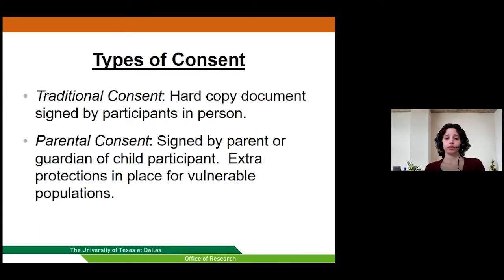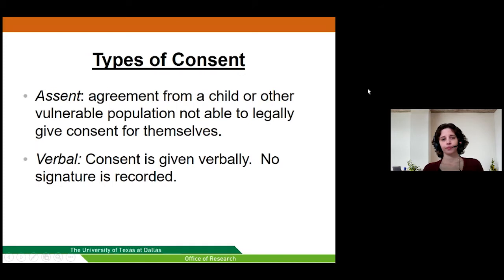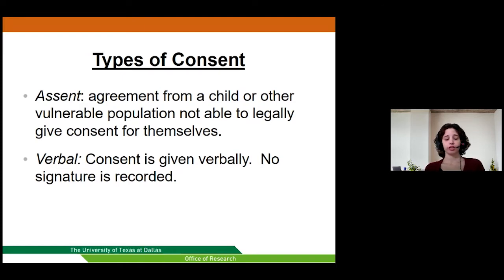Parental consent is signed by a parent or guardian of a child participant — anyone 17 and under needs parental consent. Extra protections are in place for vulnerable populations such as children, those with mental disabilities, and prisoners. Assent is the way children or other vulnerable populations who cannot legally give consent provide their agreement. Verbal consent is consent given verbally with no signature recorded. For some expedited review studies, the IRB may approve a waiver of written consent, especially if obtaining a signature increases the risk of participation. Verbal consent is also required for minimal review studies.